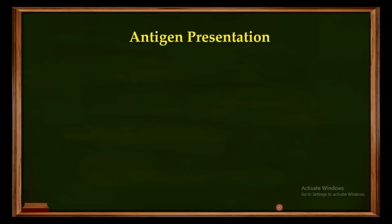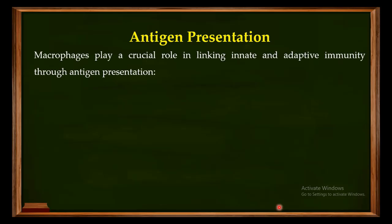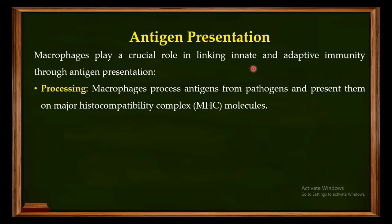Another important function of macrophages is antigen presentation. Macrophages play a crucial role in linking innate and adaptive immunity through antigen presentation. After processing antigens from pathogens, macrophages present them on major histocompatibility complex (MHC) molecules expressed on their surface. The macrophages use these MHC molecules to attract cells of the adaptive immune system — like T cells — for the clearance of pathogens from the body.